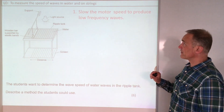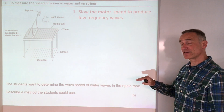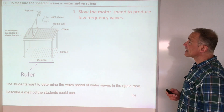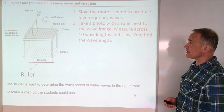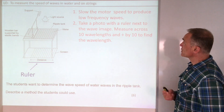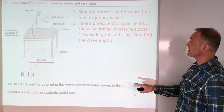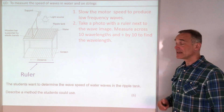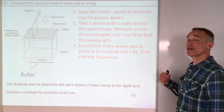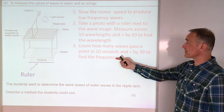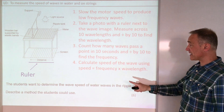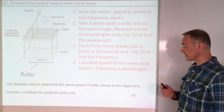Some exam answers: first, slow the motor down because if the frequency is too high you won't be able to count the waves and the wavelengths will be too small. Draw a ruler next to the patterns so the examiner knows you understand to place a ruler there. Take a photo with a ruler next to the wave image, measure across 10 wavelengths and divide by 10 to find the wavelength. Count how many waves pass a point in 10 seconds and divide by 10 to find the frequency. Finally, calculate the speed using speed equals frequency times wavelength — quote the equation. Six marks.